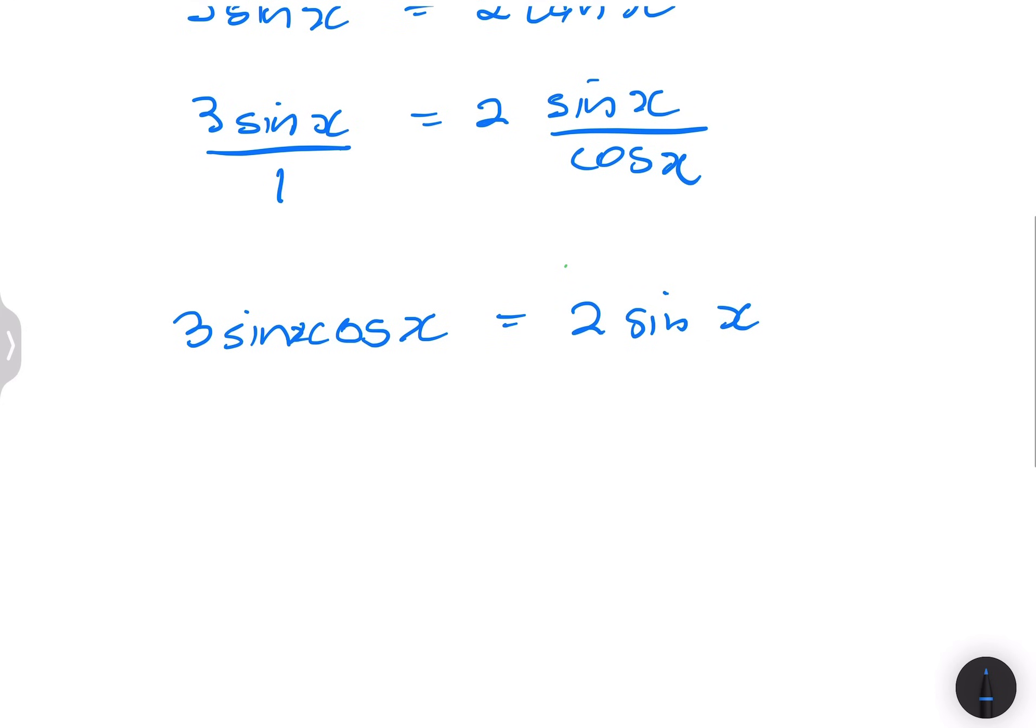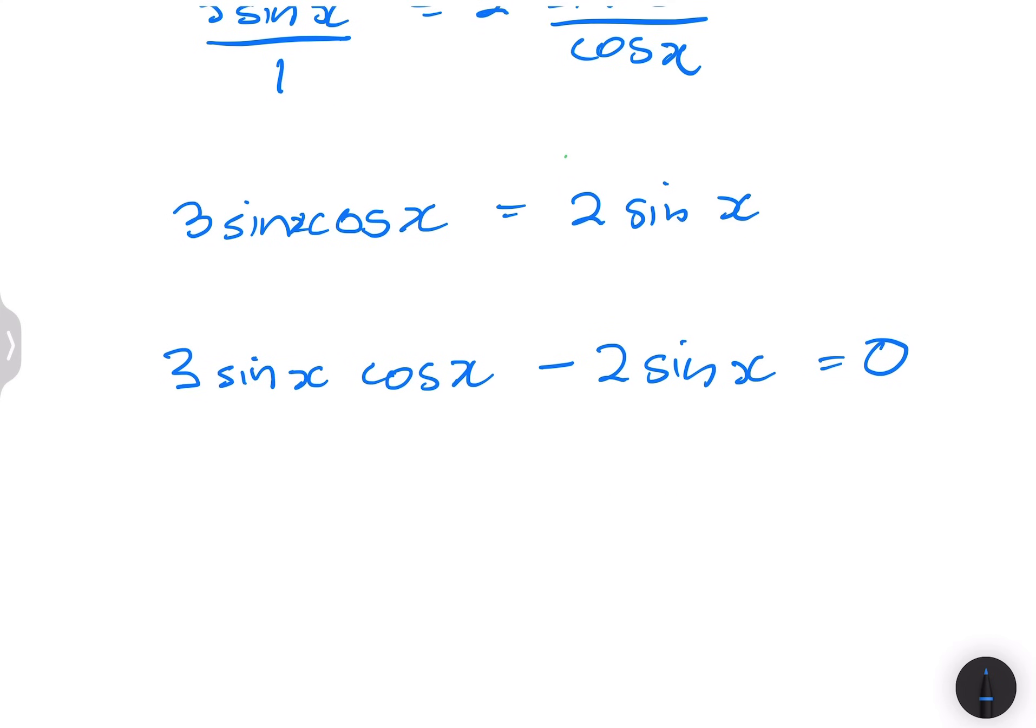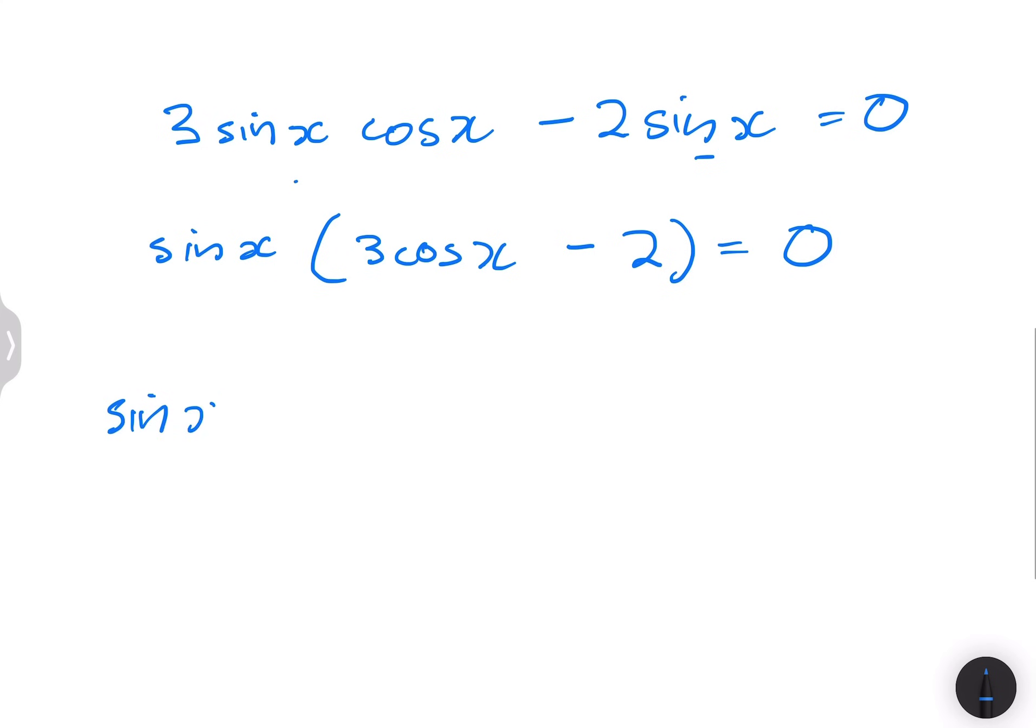Now, what we're going to do is just try to move everything over to the one side. So we've got three sine X cos of X minus two sine of X is equal to zero. So we've got now, obviously, we've got sine X on both terms. So I'm going to isolate that sine X in this case. So that would give me three cos of X in the one minus two in the other. So I've got sine of X is equal to zero.